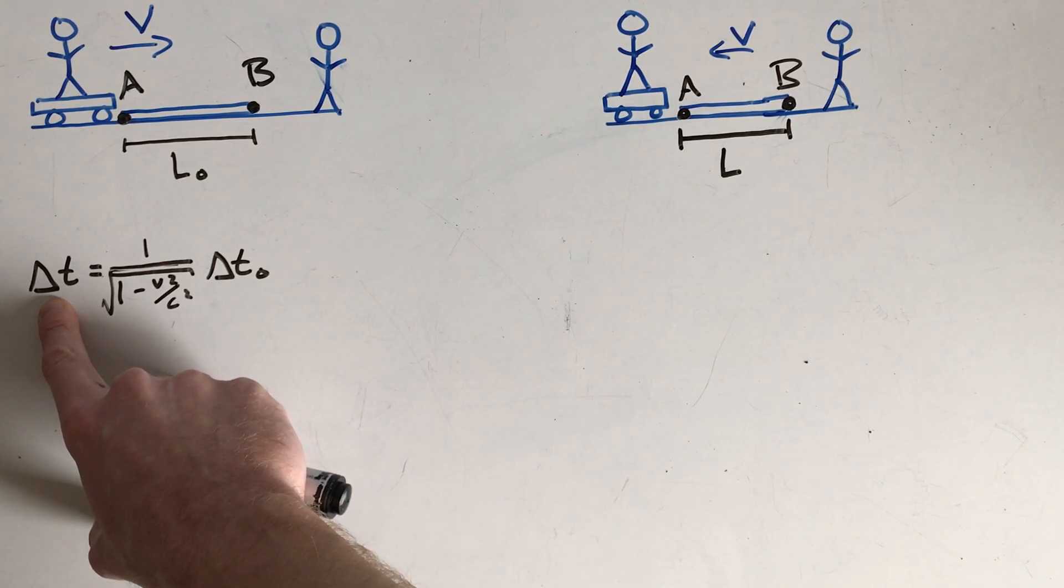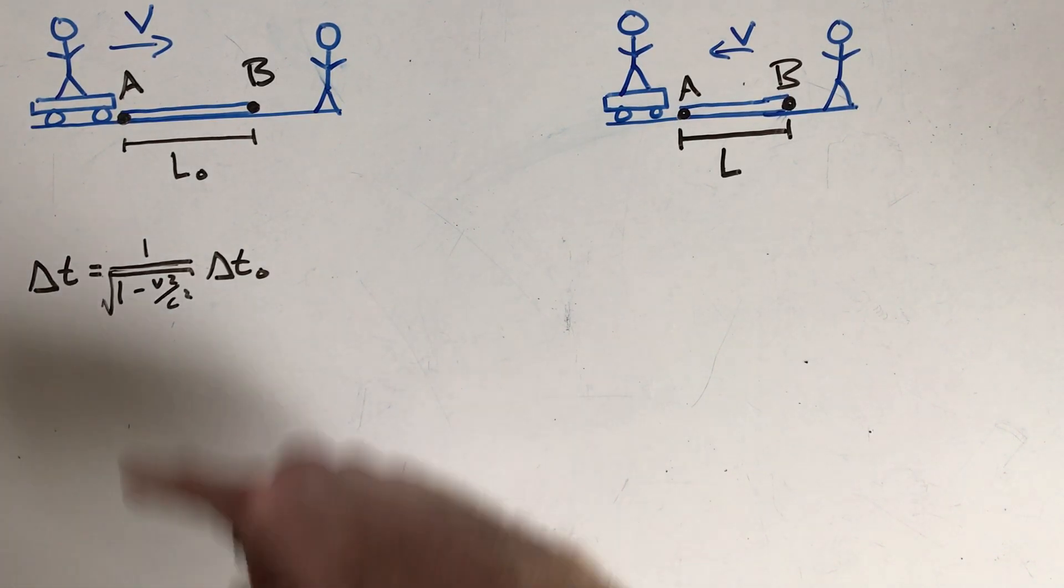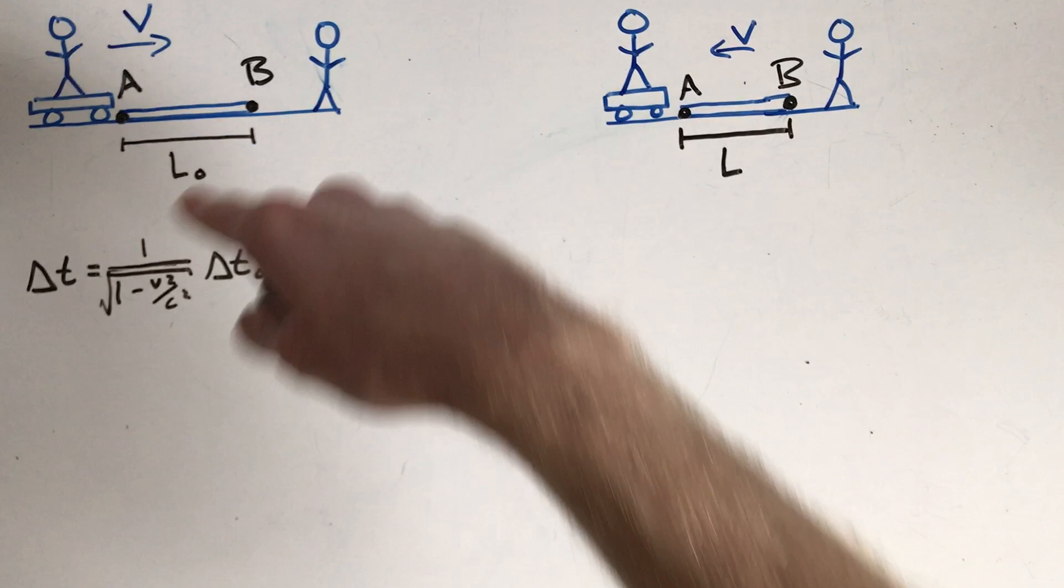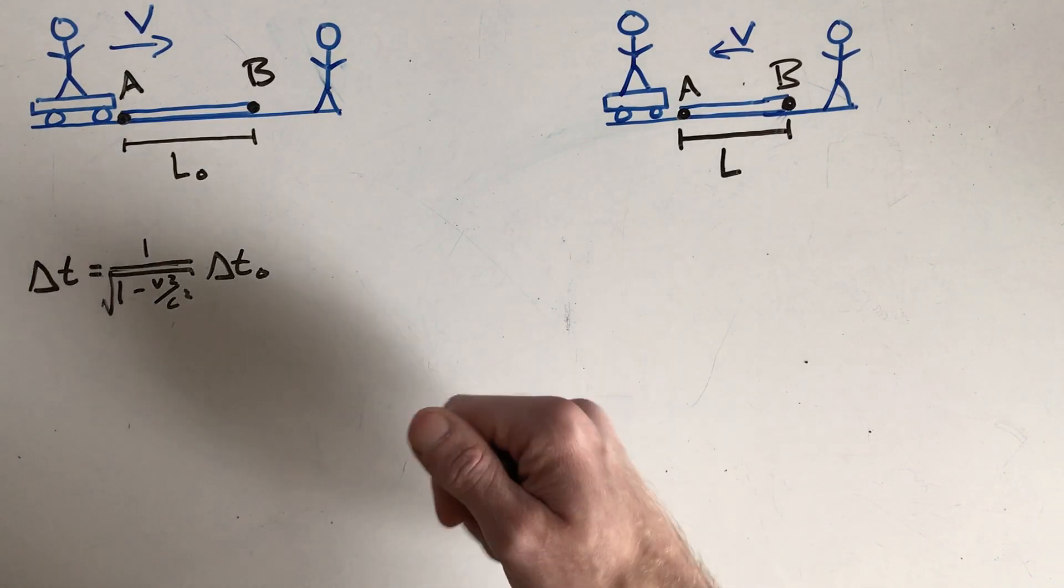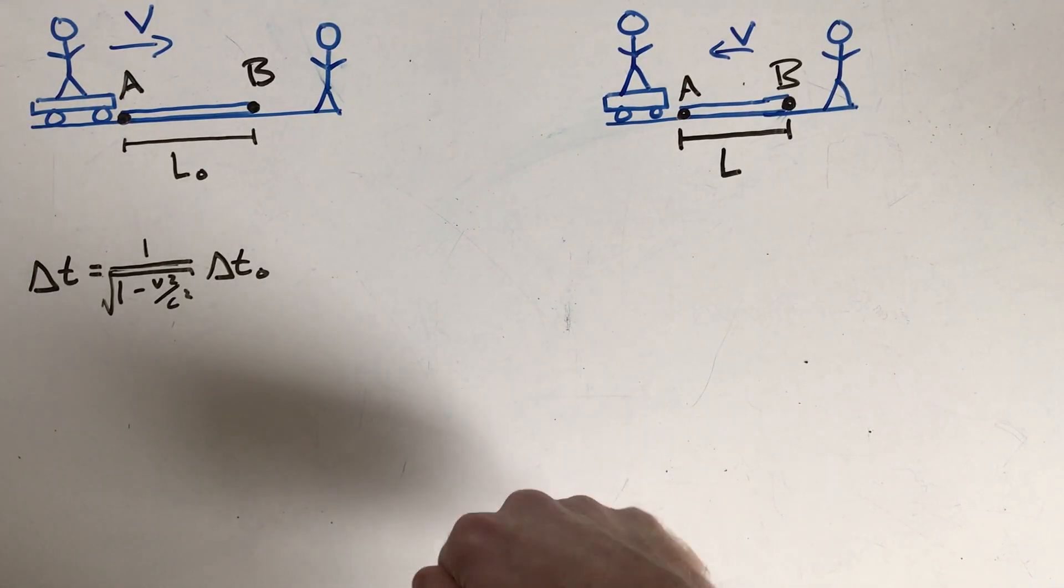And this makes sense from the last video because if you think about the light clock, the person who was at rest with respect to the light clock would measure less time between the ticks, the light going from one mirror to the other, than someone who observes the light clock to be moving. The person who observes the light clock moving will measure more time between each tick of the light clock.